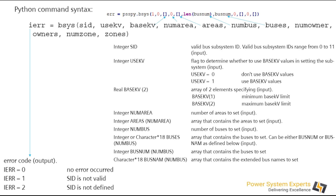Let us take an example of an API which is used to create a subsystem. If you want to create a bus-based subsystem, this is how you can do it. This is a typical command or syntax which comes from the API PDF document. The part you see on your left-hand side is basically the return value.